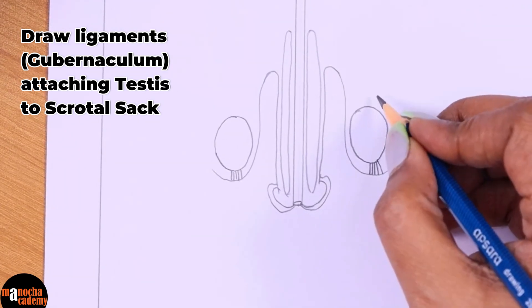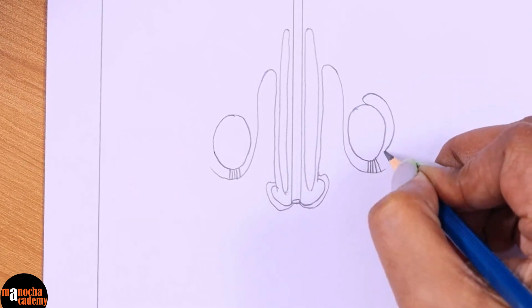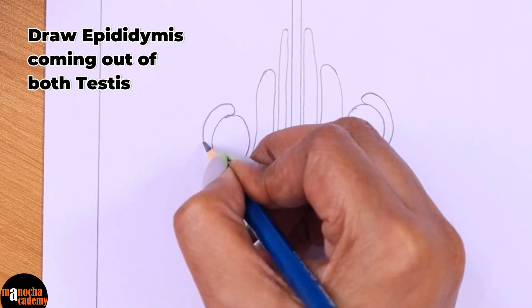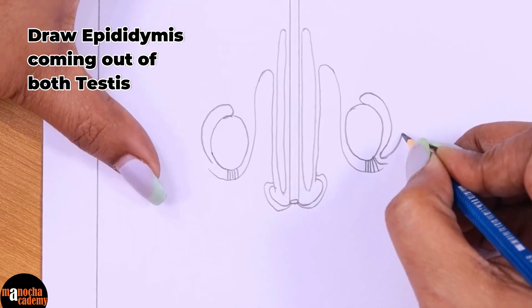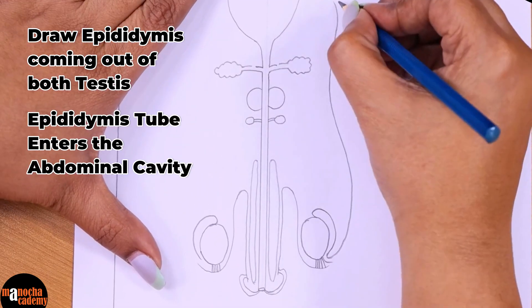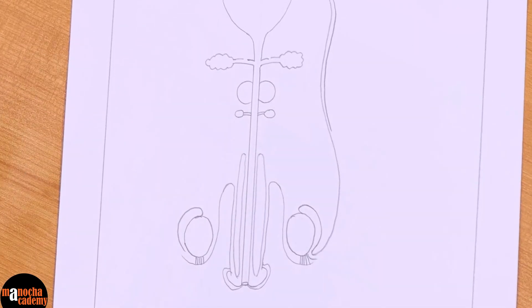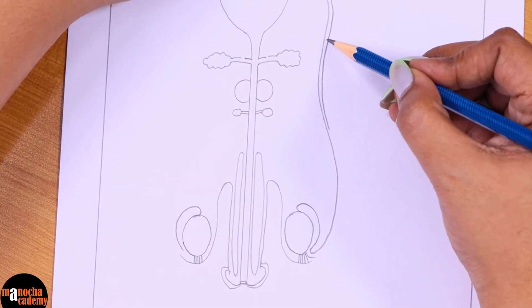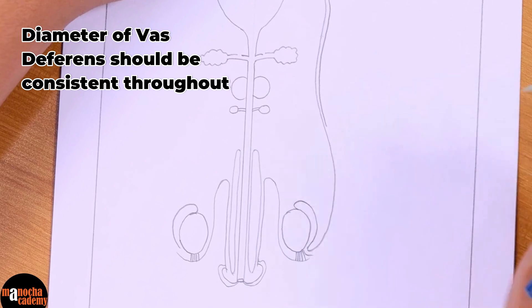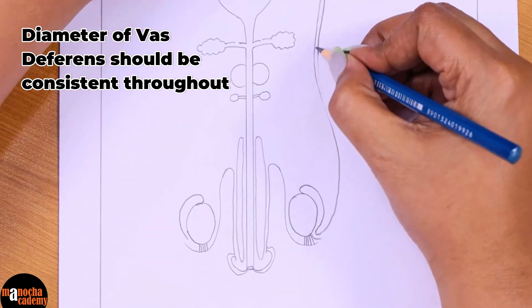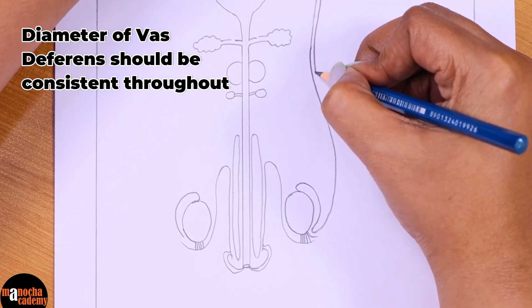From the two sides of the testis, we will bring out the epididymis. The epididymis becomes a tube and continues back into the abdominal cavity. We will have to double line it obviously. One thing that I made a mistake here and I would like you to notice is that the diameter of the vas deferens is very big, is wider here and it is narrower here. It should not be the case. Draw in such a manner that the diameter of the vas deferens is equal everywhere.